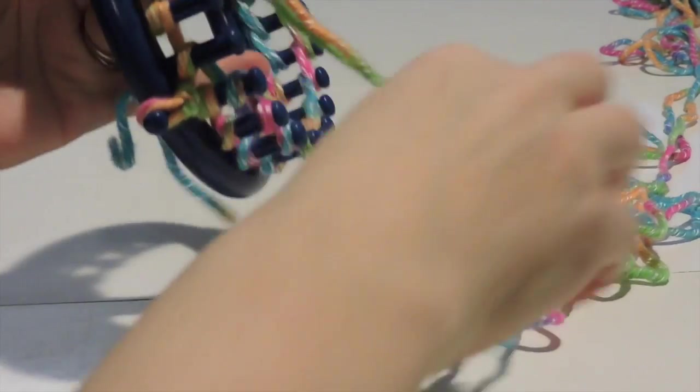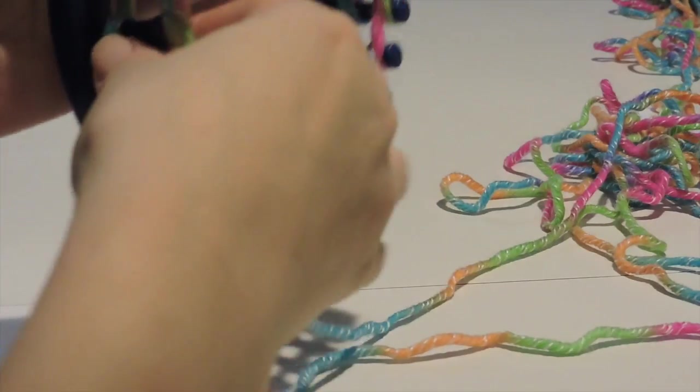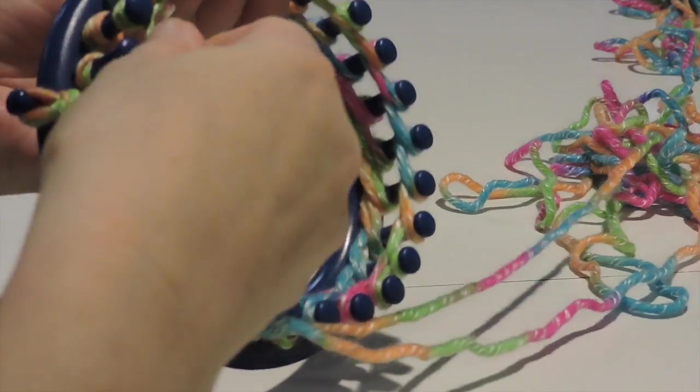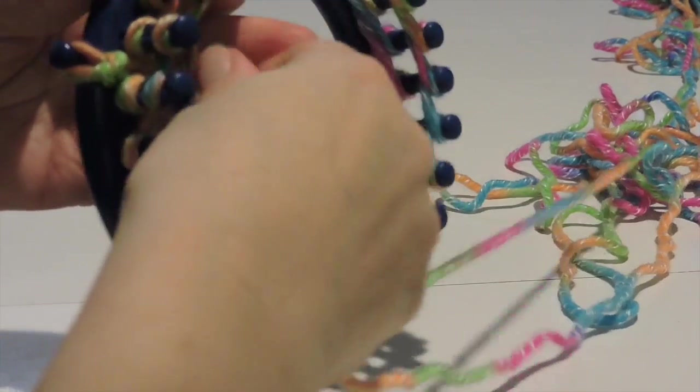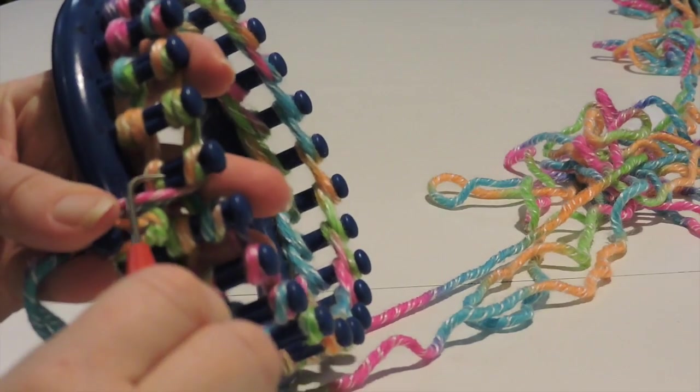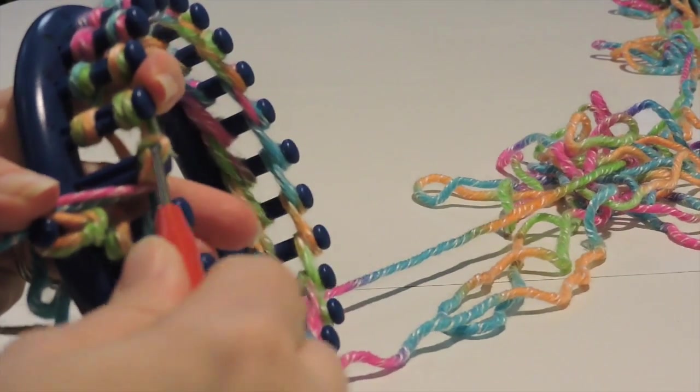After we're done doing the second part of our E-wrap cast-on, we meet up at the anchor peg. Then we're going to grab our yarn tool and take the bottom loop over the top.